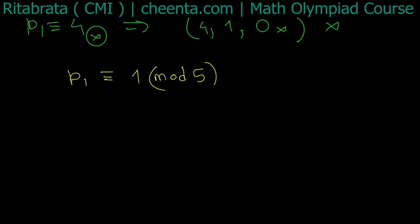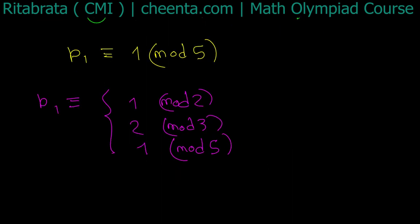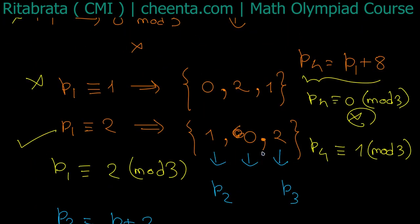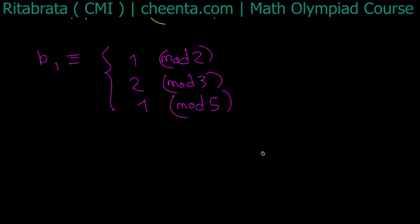So what do we get about p1? p1 is congruent to 1 modulo 2, 2 modulo 3, and 1 modulo 5. See, because this sequence q1, q2, q3, q4 also behaves the same, I can replace p's by q's and the results will be same. So I can conclude the same for q, that q1 is congruent to this thing.